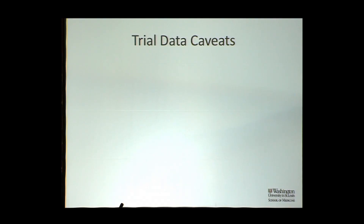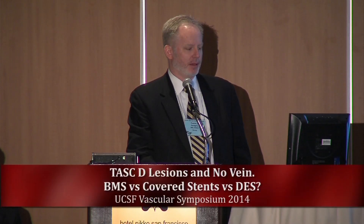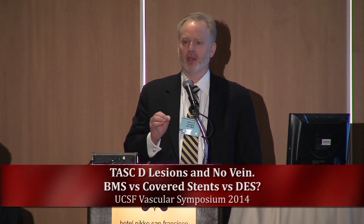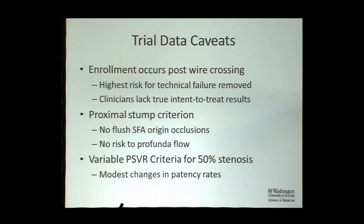Trial data is a bit of a squirrel when you look at it — and I'm partially to blame for this, so mea culpa. If we look at what you don't normally pick up when examining these studies, it's really quite important, particularly when thinking about TASTI lesions. In virtually every study mentioned today, enrollment in the trial occurred after wire crossing was accomplished — meaning the highest risk for technical failure was taken completely out of the picture and never talked about again. And even when intent-to-treat was mentioned, I guarantee that was post-wire-crossing intent-to-treat analysis. So what we don't have in the clinic conversation with a patient is a true grasp on intent-to-treat results, and this is true for critical limb ischemia as well.